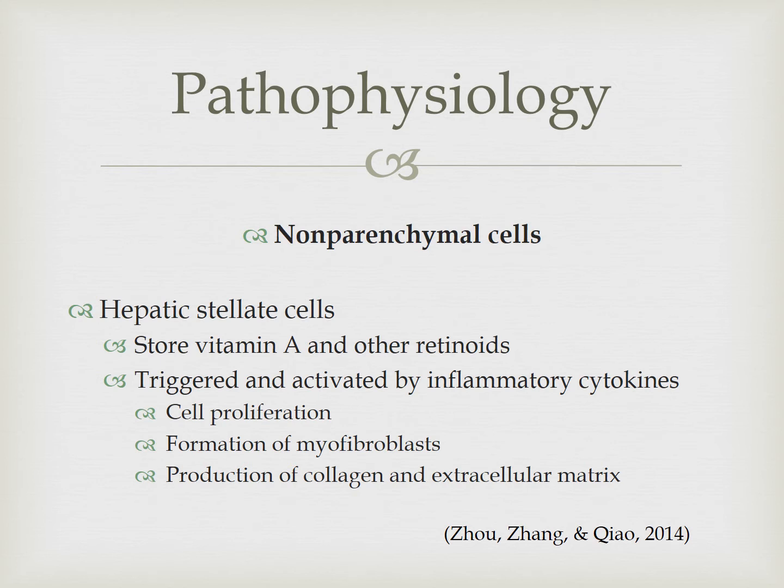The first non-parenchymal cells are the hepatic stellate cells, and they store vitamin A and other retinoids. They are triggered and activated by inflammatory cytokines such as transforming growth factor, platelet-derived growth factor, tumor necrosis factor, and interleukin-1. As they are activated, it leads to cell proliferation and the formation of myofibroblasts, which are involved in the production of collagen and extracellular matrix — essentially trying to heal up the tissue, creating scar tissue.